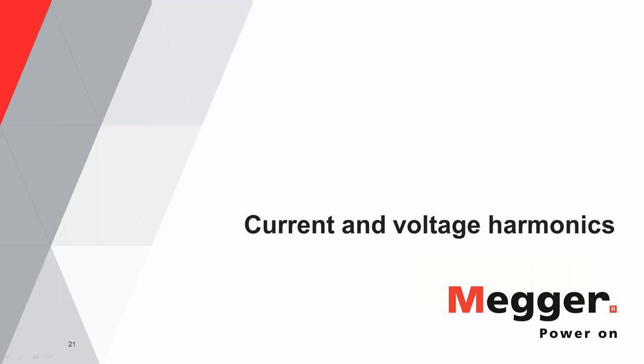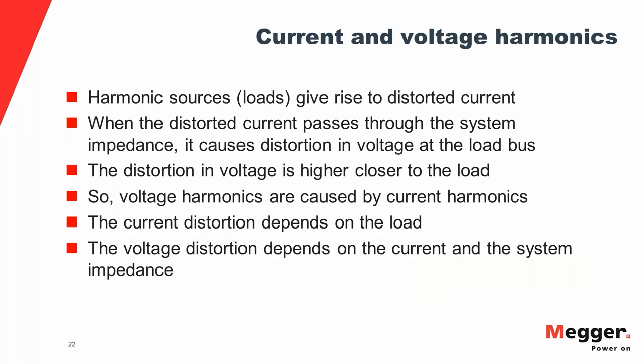Moving to current and voltage harmonics: current harmonics are the distorted current drawn by nonlinear loads. When that distorted current flows through the system impedance, it gives rise to voltage distortion. Current distortion depends solely on the load, but voltage distortion depends on both the current and the system impedance through which it passes. Voltage harmonics are therefore caused by current harmonics.